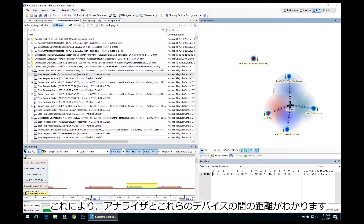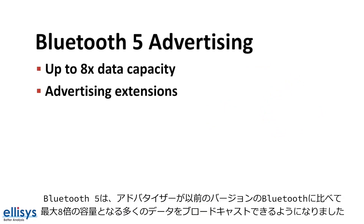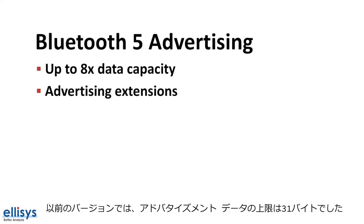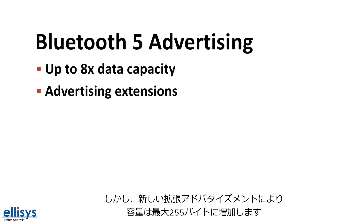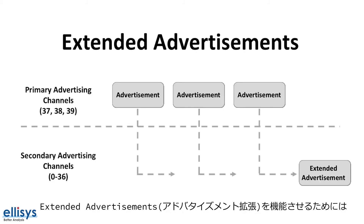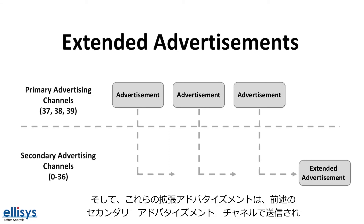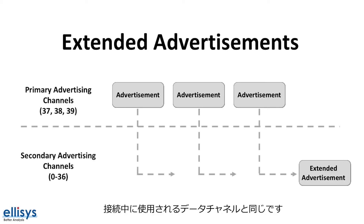Bluetooth 5 introduced a feature that allows advertising devices to broadcast much more data than previous versions of Bluetooth — up to eight times the capacity. This new feature is called advertising extensions, or extended advertisements. In earlier versions, the advertisement data was capped at 31 bytes, but with extended advertisements the capacity is increased to up to 255 bytes. The way advertising extensions work is by the device sending out primary advertisements which contain information on how to locate, in time and frequency, the secondary advertisements — called extended advertisements — which are sent out on the secondary advertisement channels, the same as the data channels used during a connection.